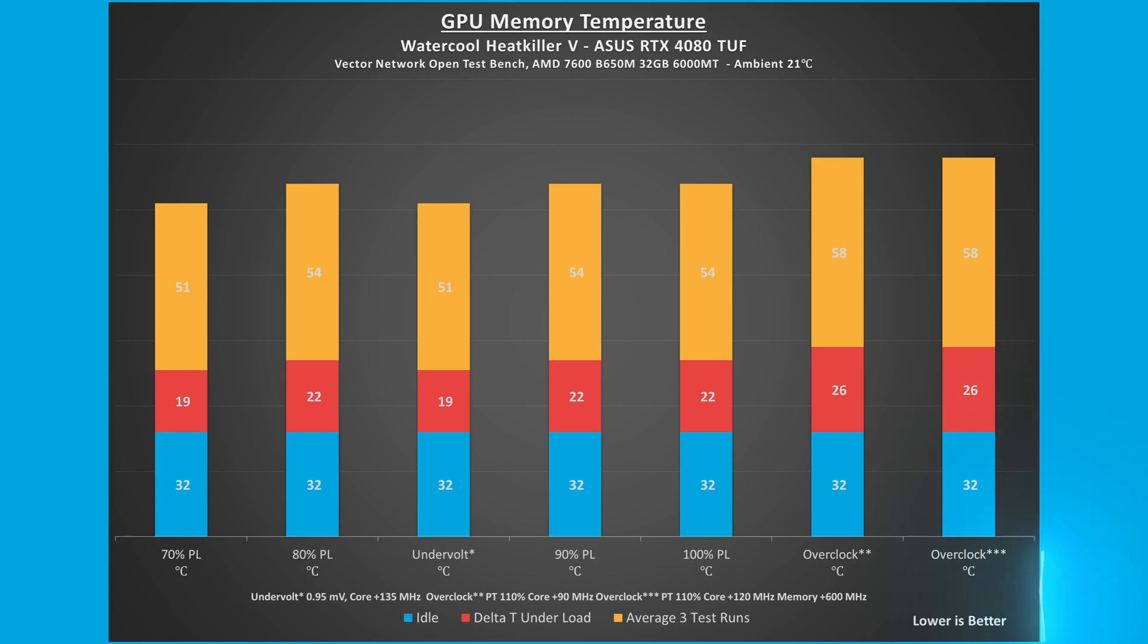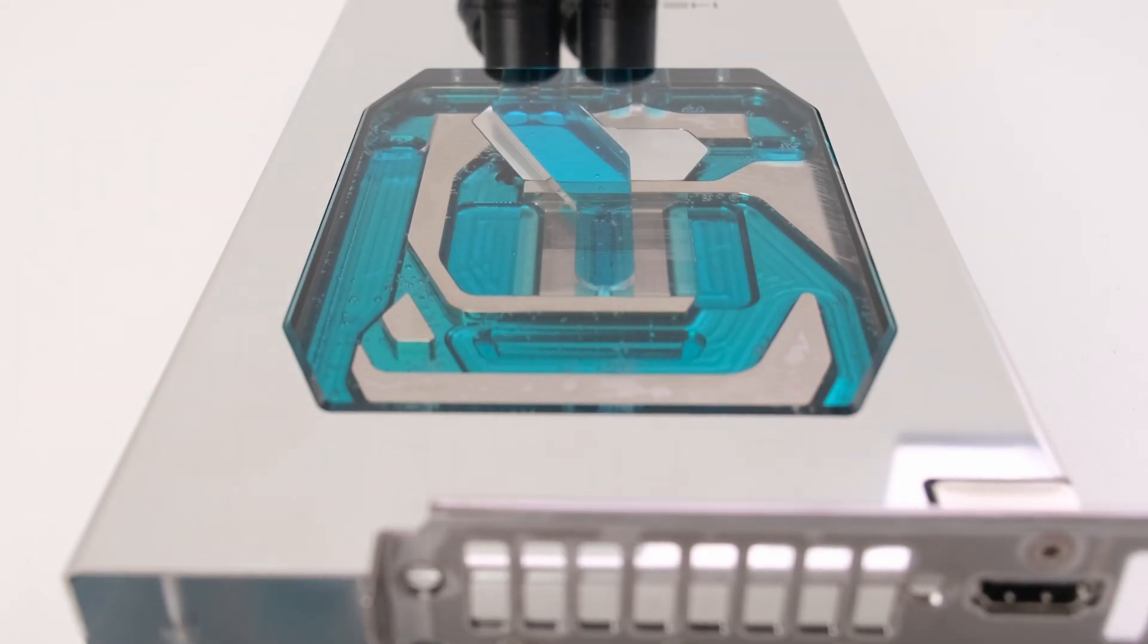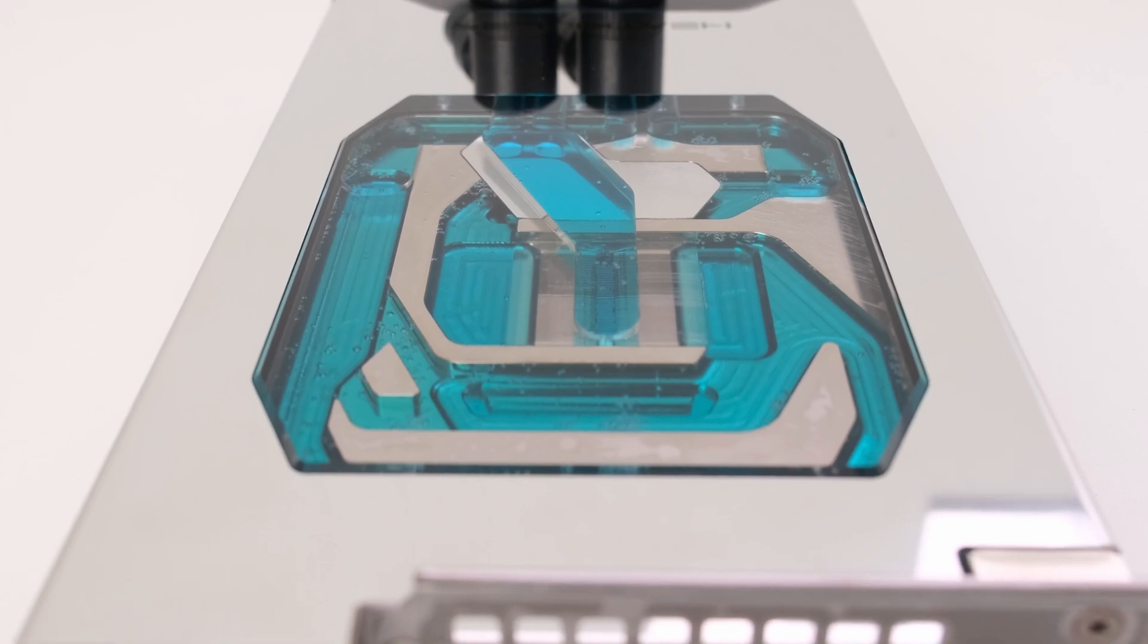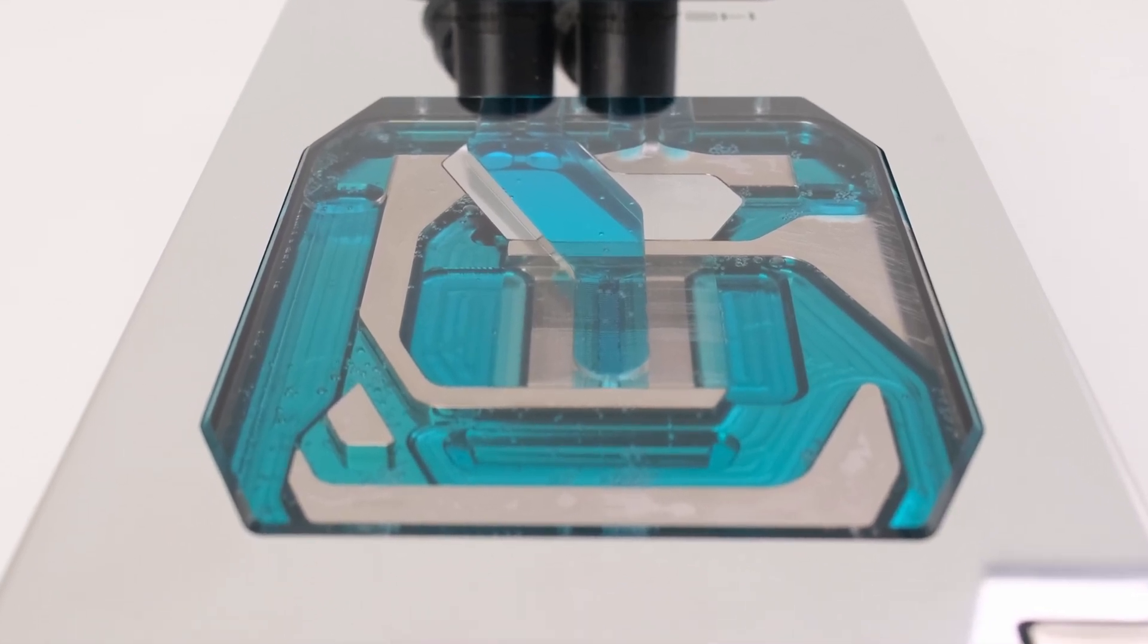Lowering the power limit to 70%, the GPU core and memory temperatures were 6 and 3 degrees Celsius lower respectively compared to 100% power limit.